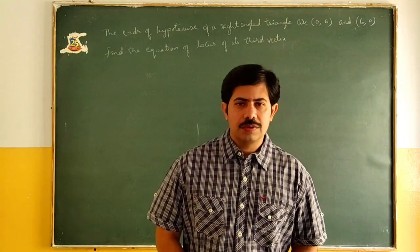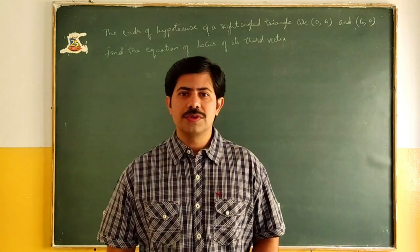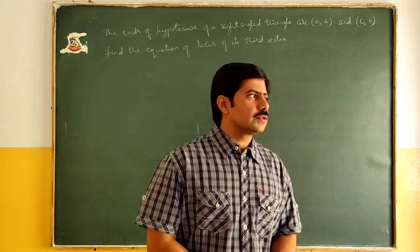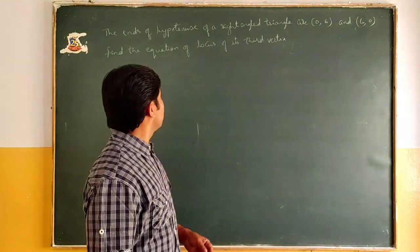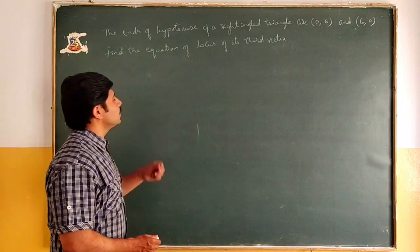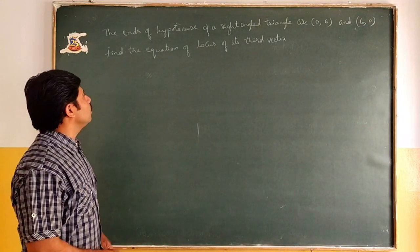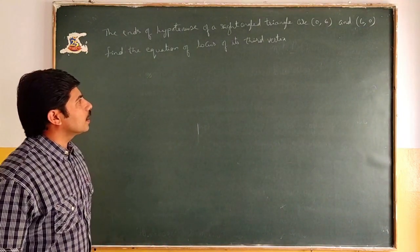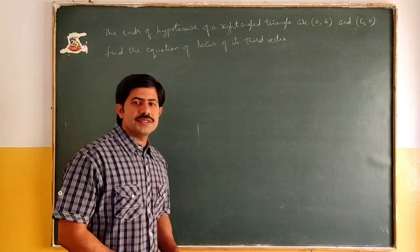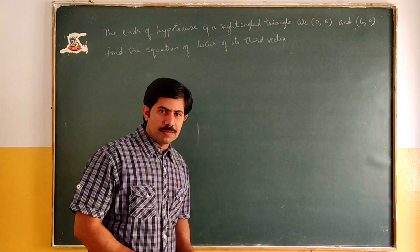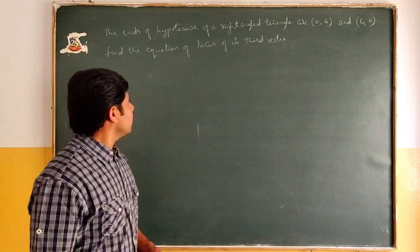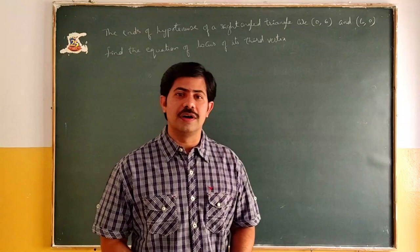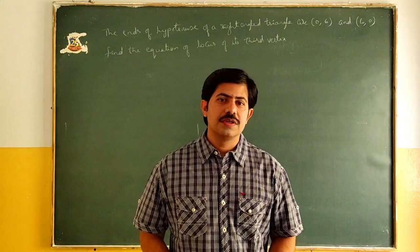Now we will continue the problems on locus. The next problem is: the ends of the hypotenuse of a right angle triangle are (0,6) and (6,0). Find the equation of locus of its third vertex.